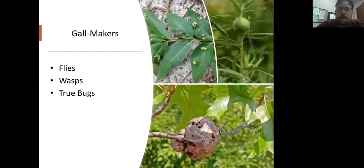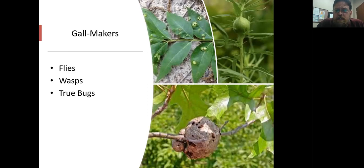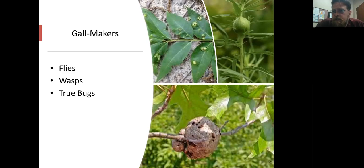Some insects form galls on plants. The most common one you'll see in the landscape is the pecan phylloxera — if you have a pecan tree, you'll eventually see the large wart-like structures on the leaves, with insects protected inside. Various flies and wasps also form galls; for example, a fly gall on goldenrod, or the very frequently seen oak galls on leaves and stems caused by gall wasps.